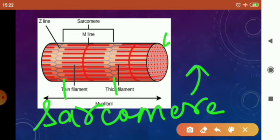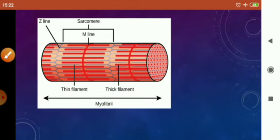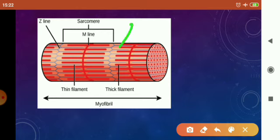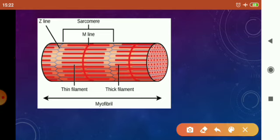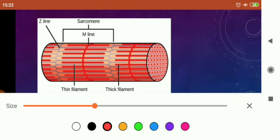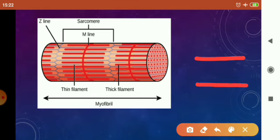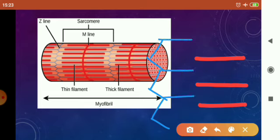The sarcomere is the unit of contraction. For the contraction and relaxation of muscles, many theories were given, but the most accepted theory is the sliding filament theory. According to this theory, you can see in this diagram — if this is the thick filament and this is the thin filament — the thin filaments slide over the thick filament.